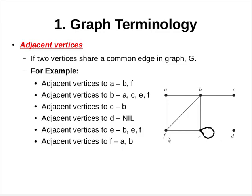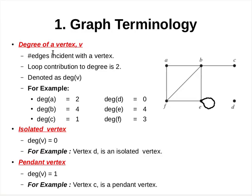The next term to be considered is the degree of a vertex V. The degree of a vertex V is the number of edges incident with that vertex. Note that a loop at a vertex V contributes twice to the degree. The degree of a vertex is denoted as deg(V). In the given graph G, the degree of vertex A is 2, whereas the degree of vertex B is equal to 4.